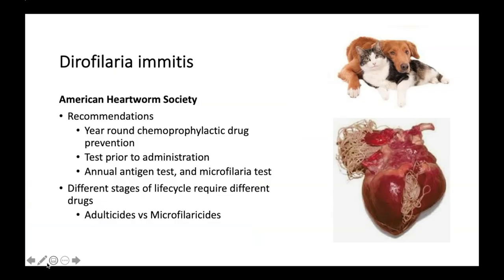The American Heartworm Society recommends year-round chemoprophylactic drug prevention. They recommend testing prior to administration and performing an annual antigen test and microfilaria test. Different stages of the life cycle require different drugs. Here in Canada, we don't necessarily have year-round heartworm prevention at this point. In southern Ontario, we're starting to see more heartworm, though not as much as in the US, especially the southern states.